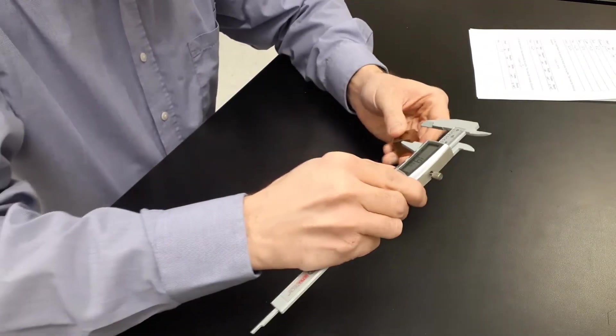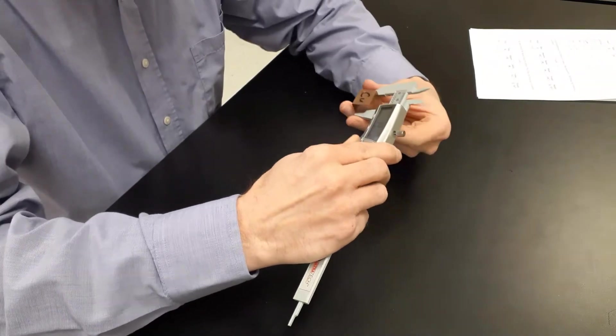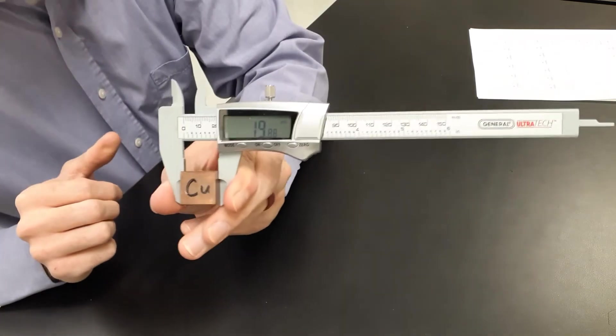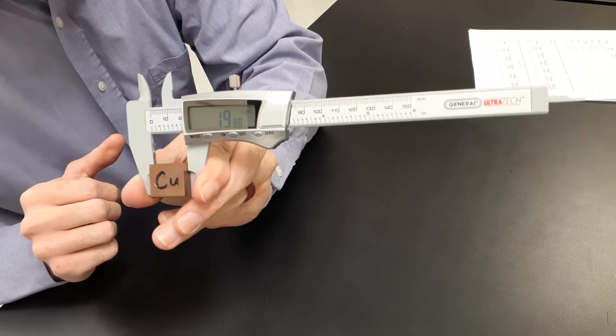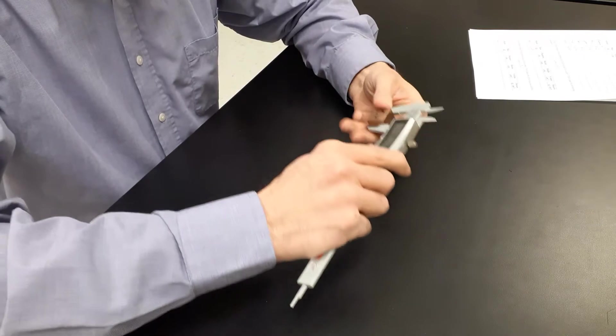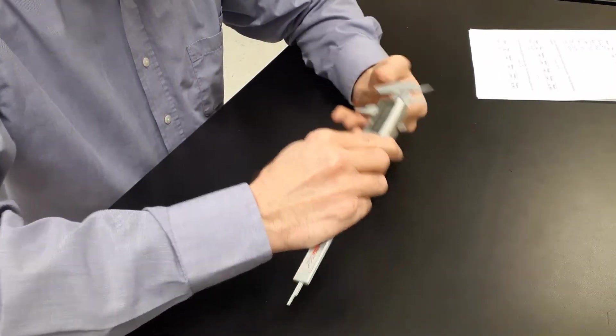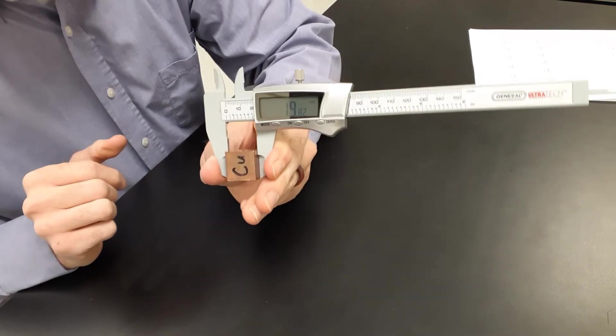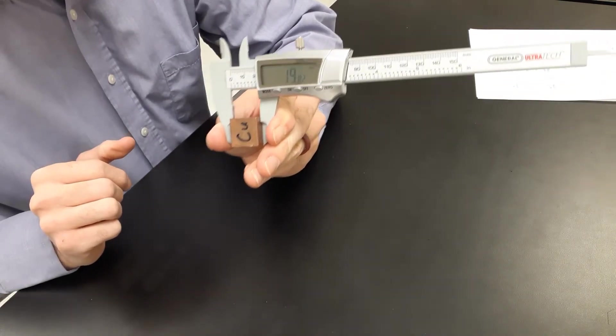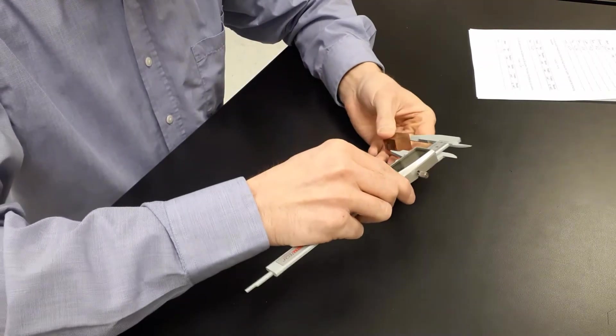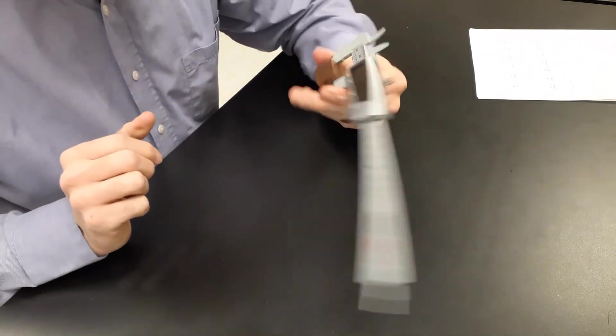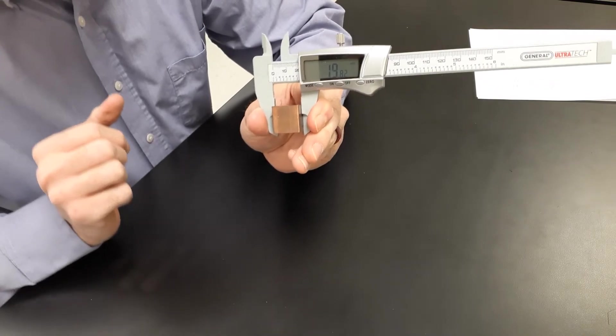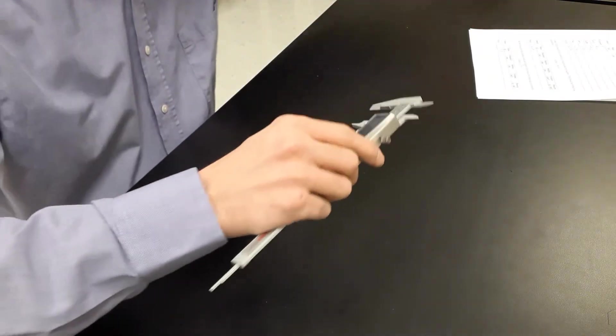Now copper. So copper, first measurement, 19.88 millimeters. Measure the width, 19.82. And then one more measurement for the copper block, also 19.82 millimeters. Alright, that's copper.